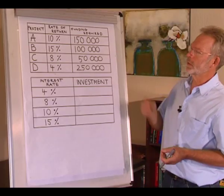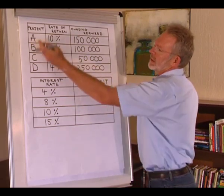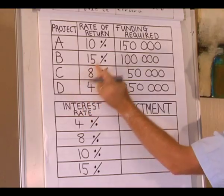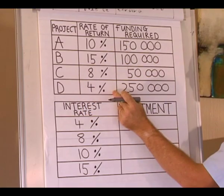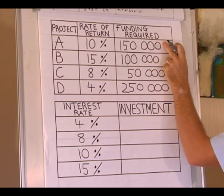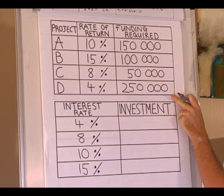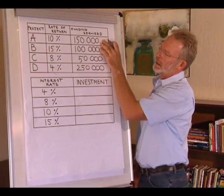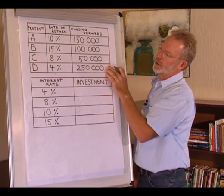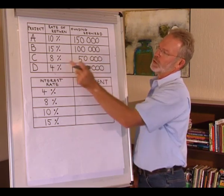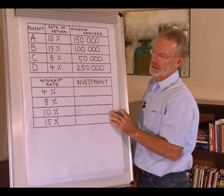The decision to invest is based on the cost of capital — what it costs us to borrow the funds — and the expected rate of return. If we turn to the table, you can see there are four projects listed, the expected rate of return, and the funding required for each of these projects. In other words, these are the amounts that we have to borrow in order to finance the projects.